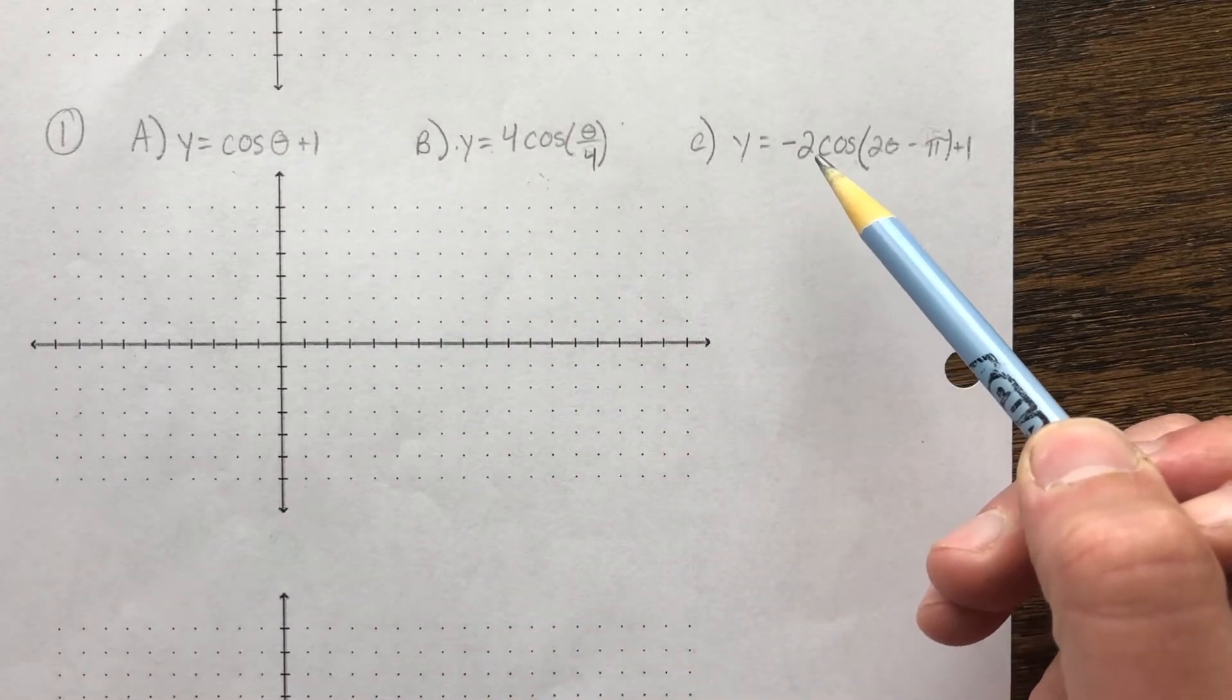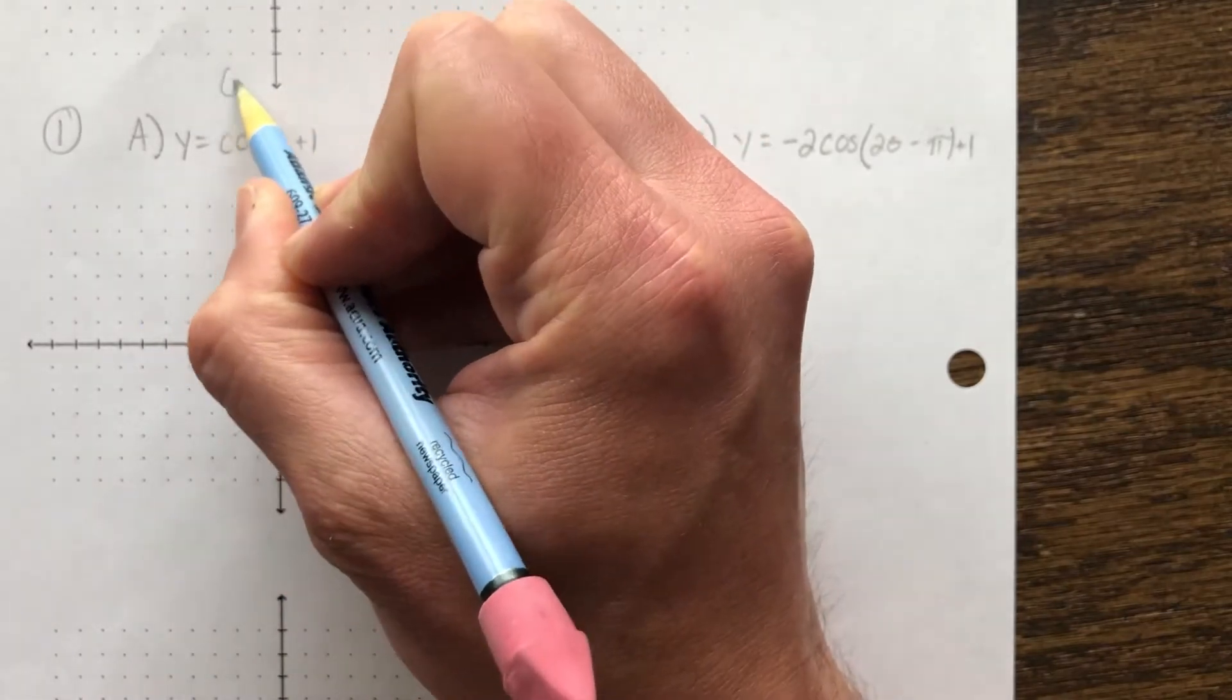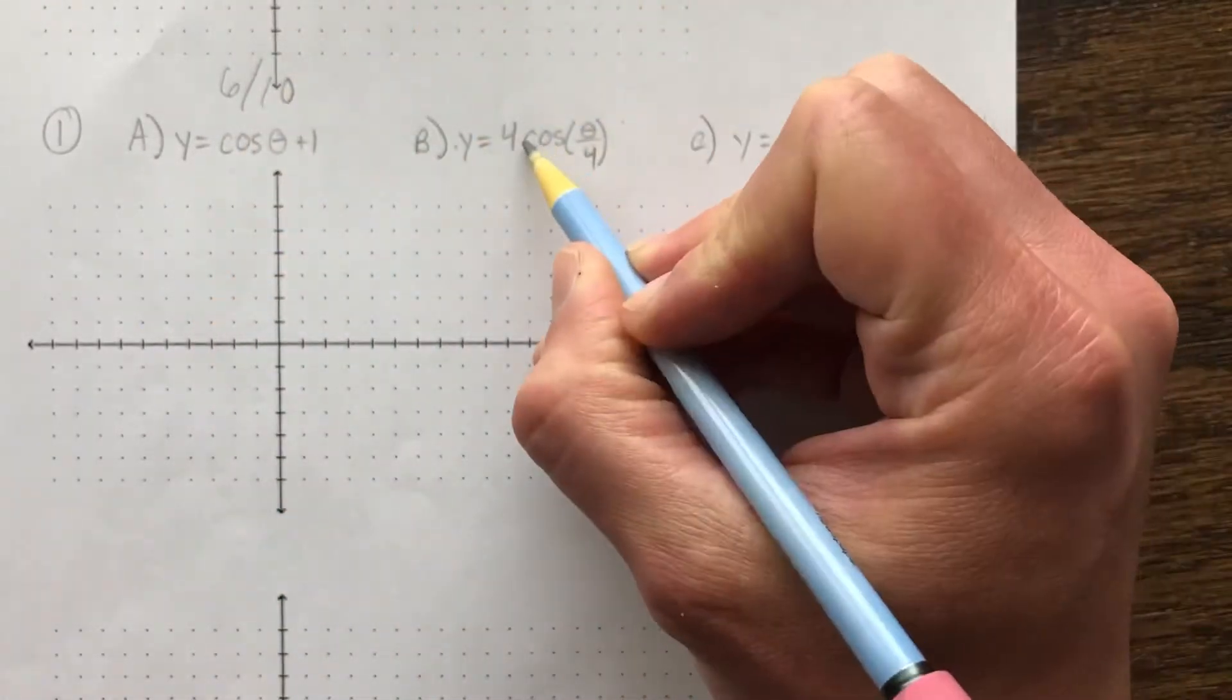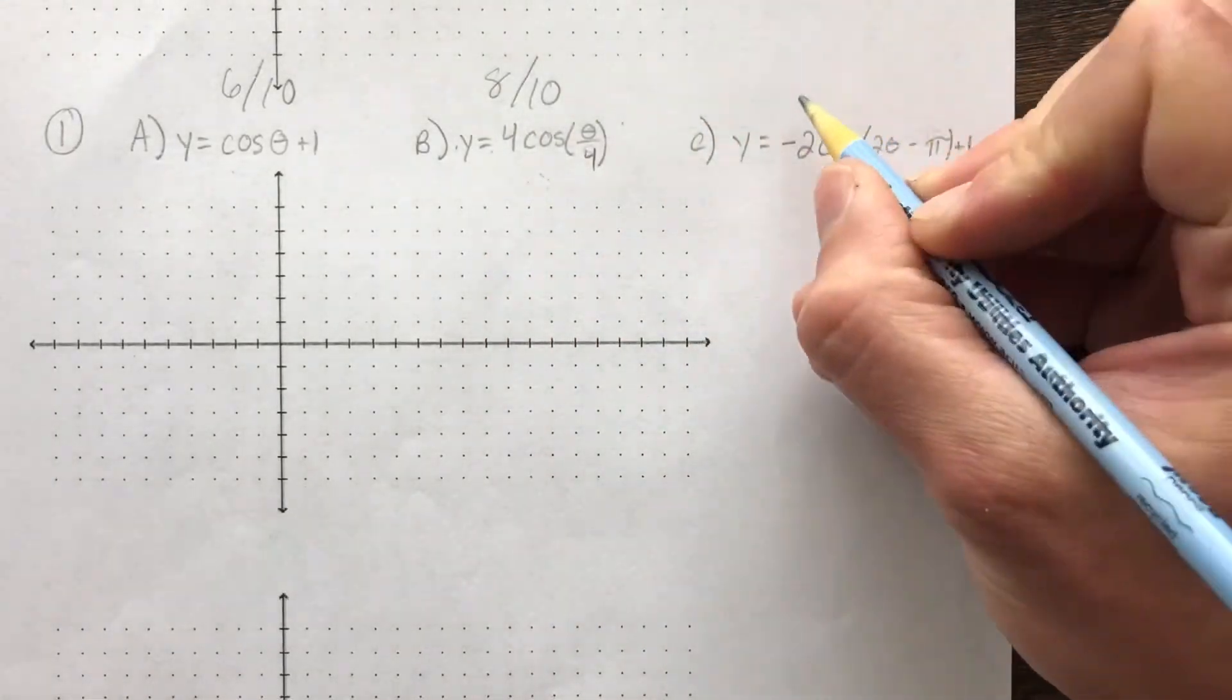If you choose the easy one, you can get a max of six out of ten. If you choose the middle one, you can get a max of eight out of ten. If you choose the hard one, you can get the full ten points.